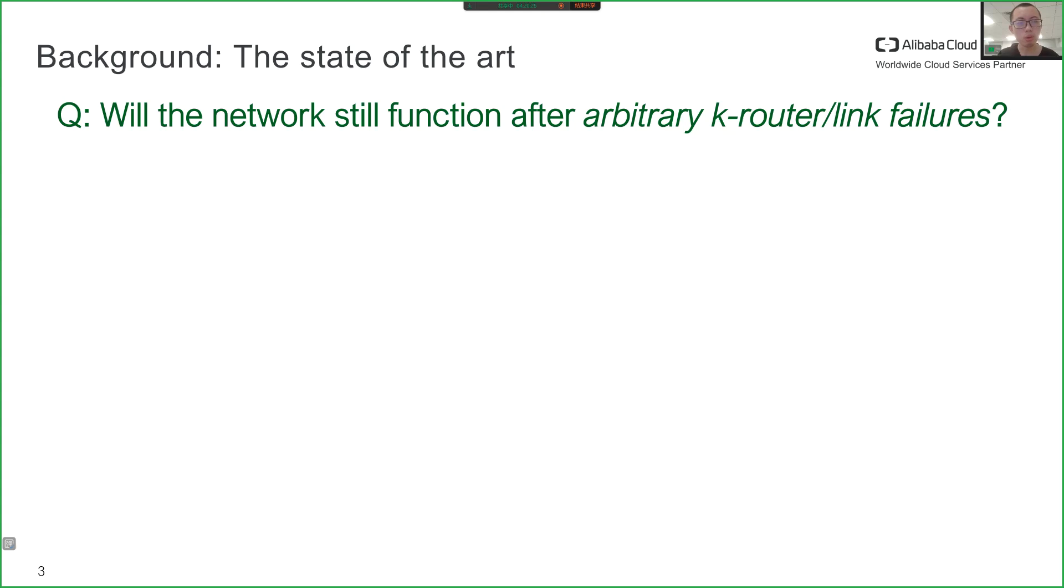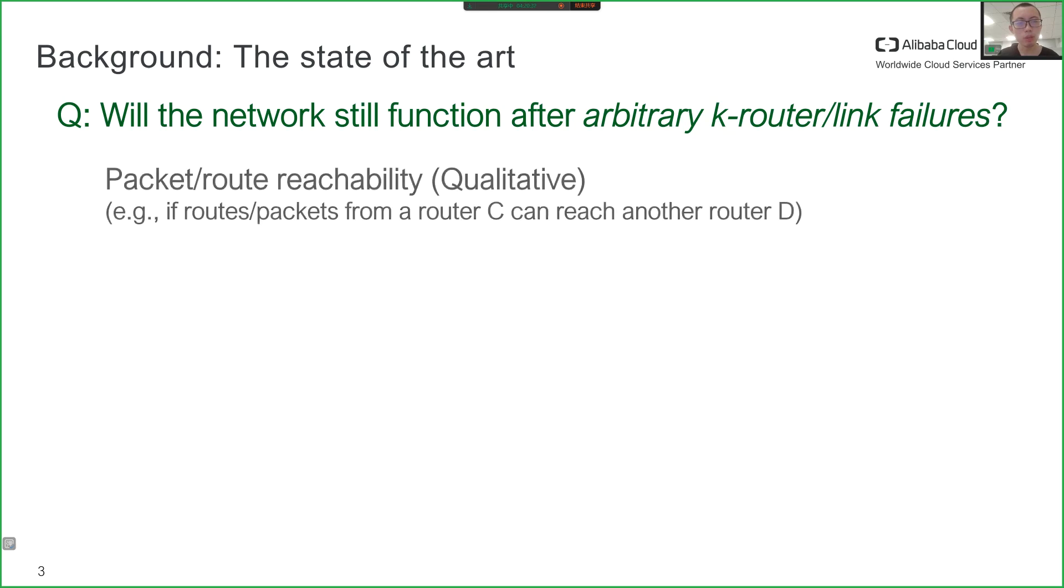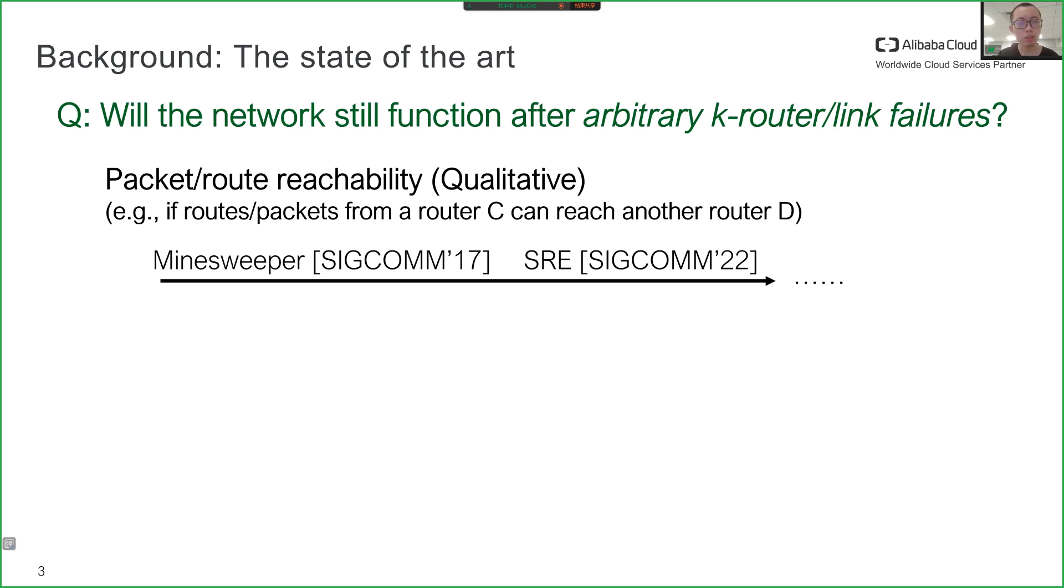Answering this question requires a definition of the desired network properties. A basic set of network properties is related to reachability, such as whether packets from router C can reach another router D. These properties are qualitative and have been studied extensively in the last decade.